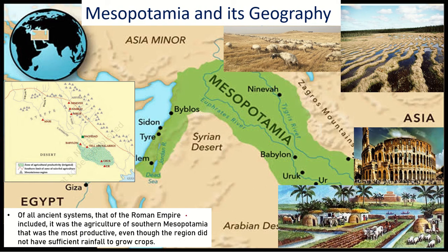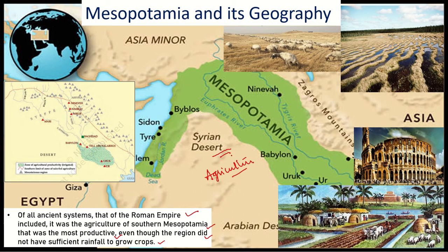Of all ancient systems, including that of the Roman Empire, it was the agriculture of southern Mesopotamia that was most productive, even though the region did not have sufficient rainfall. In the southern part, agriculture was the dominant occupation, while in the northern part it was cattle rearing. Here two rivers flow through this region — the Tigris and the Euphrates — starting from the northern mountains and flowing a long distance, collecting large amounts of silt along the way.